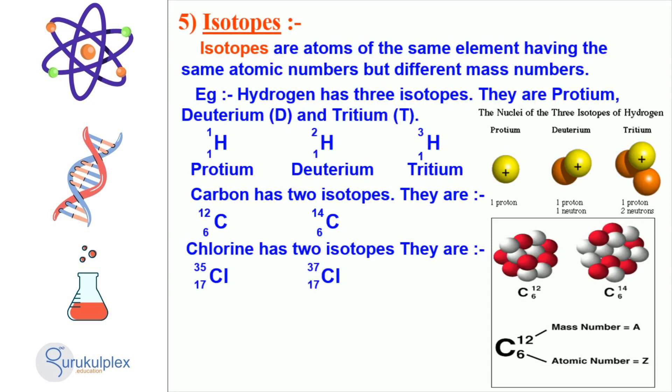Hydrogen is an example, with three isotopes including protium, deuterium, and tritium, each having the same atomic number but different mass numbers. Carbon also has two isotopes, and chlorine has two as well. This variety of isotopes provides a great range of chemical properties for each element.